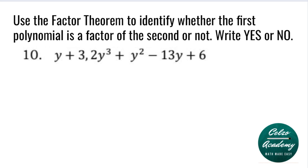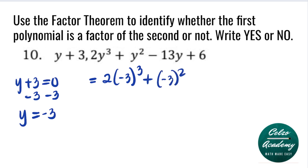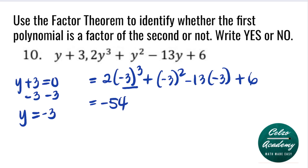Question number 10: y plus 3 and 2y cubed plus y squared minus 13y plus 6. Our y value is negative 3 since we set y plus 3 equal to 0. Subtracting 3 from both sides, our y value is negative 3. Using the factor theorem, we substitute negative 3 into our second polynomial: 2 times negative 3 to the third, plus negative 3 squared, minus 13 times negative 3, plus 6. Simplifying: negative 3 to the third is negative 27 times 2, giving negative 54. Next, negative 3 squared is positive 9.